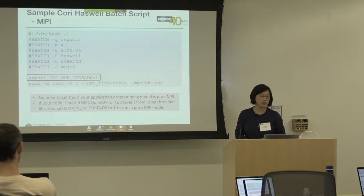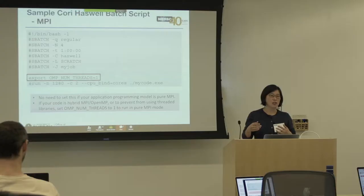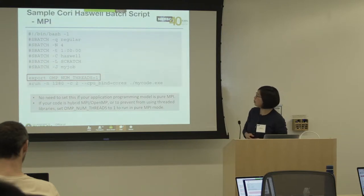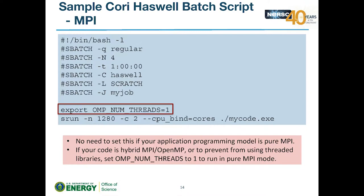Even for a pure MPI code example, set OMP_NUM_THREADS=1. If your application is hybrid MPI but you want to run in pure MPI mode, some compilers will use however many available slots are found and may accidentally launch multiple threads. To prevent that, set OMP_NUM_THREADS to 1 for pure MPI code.